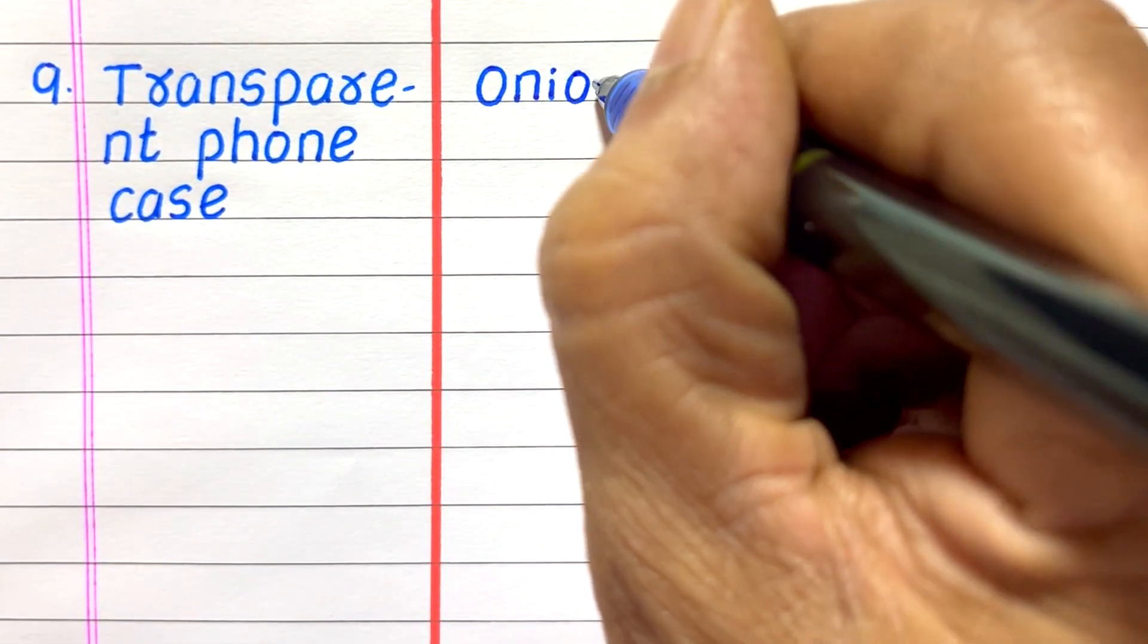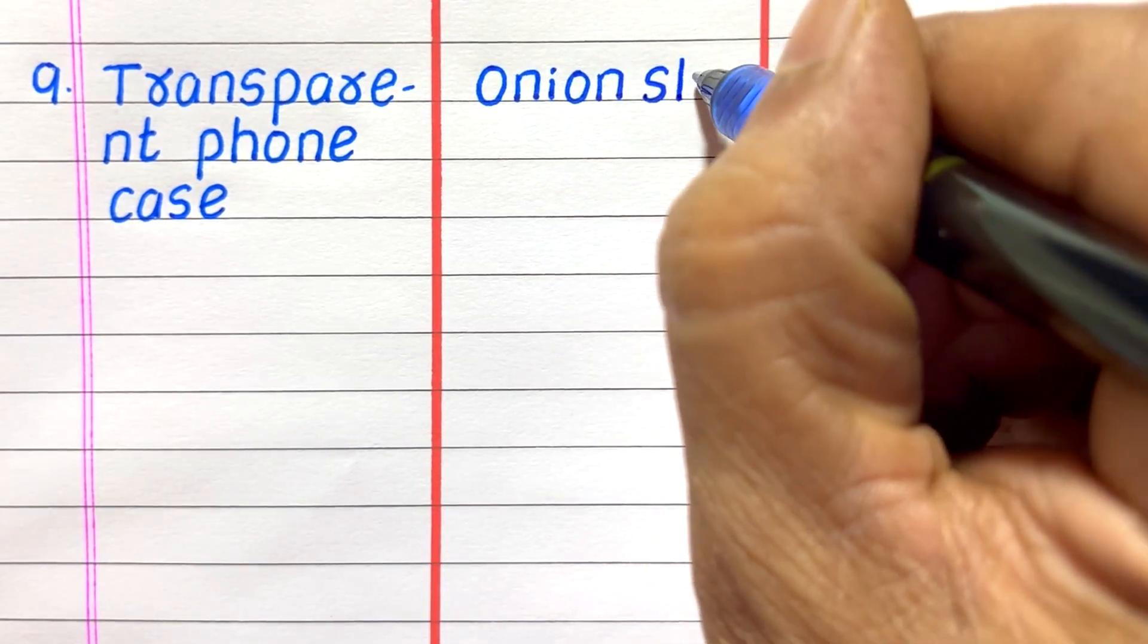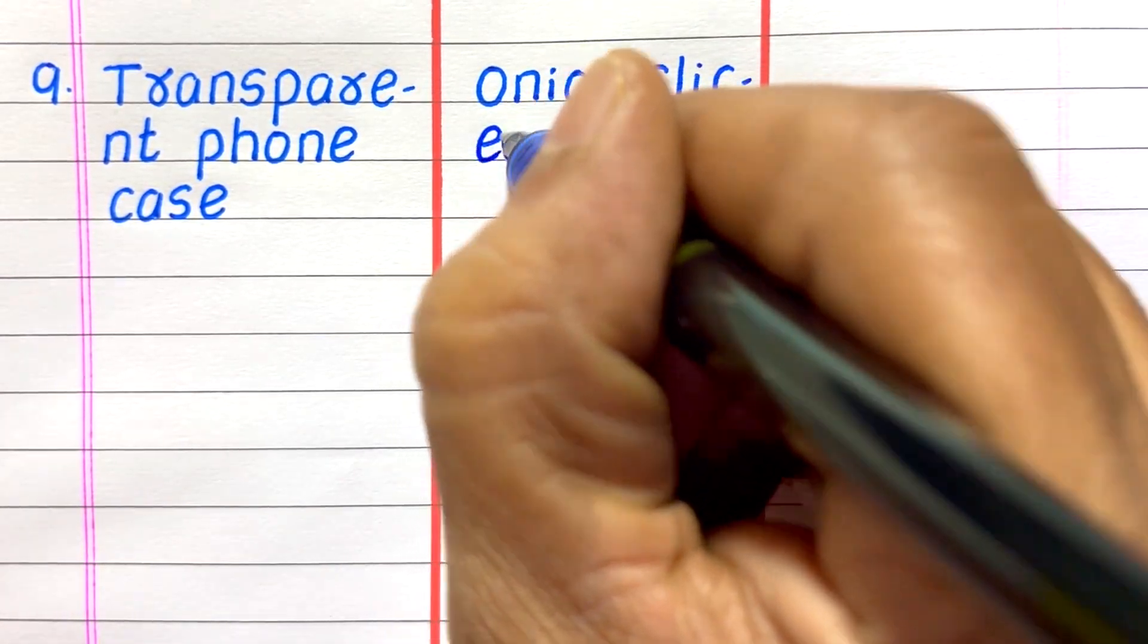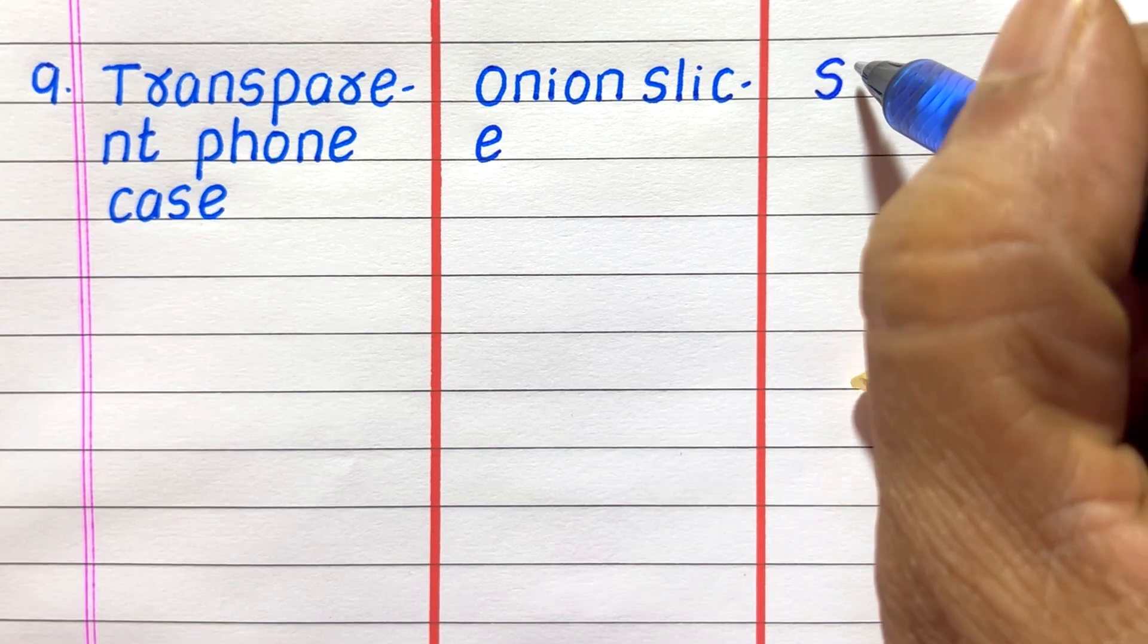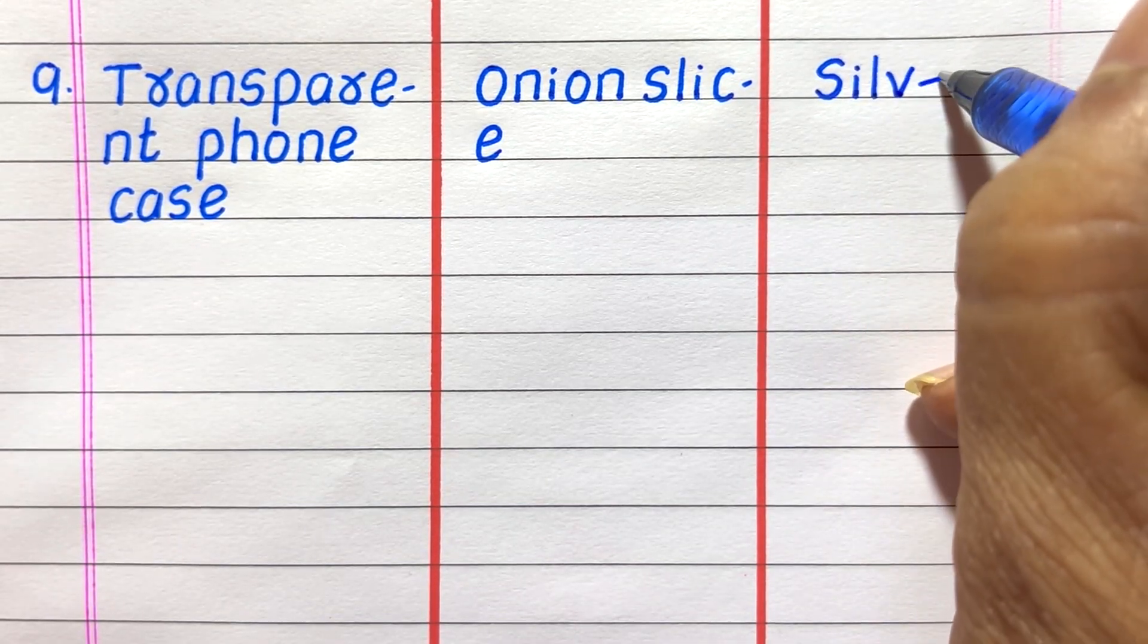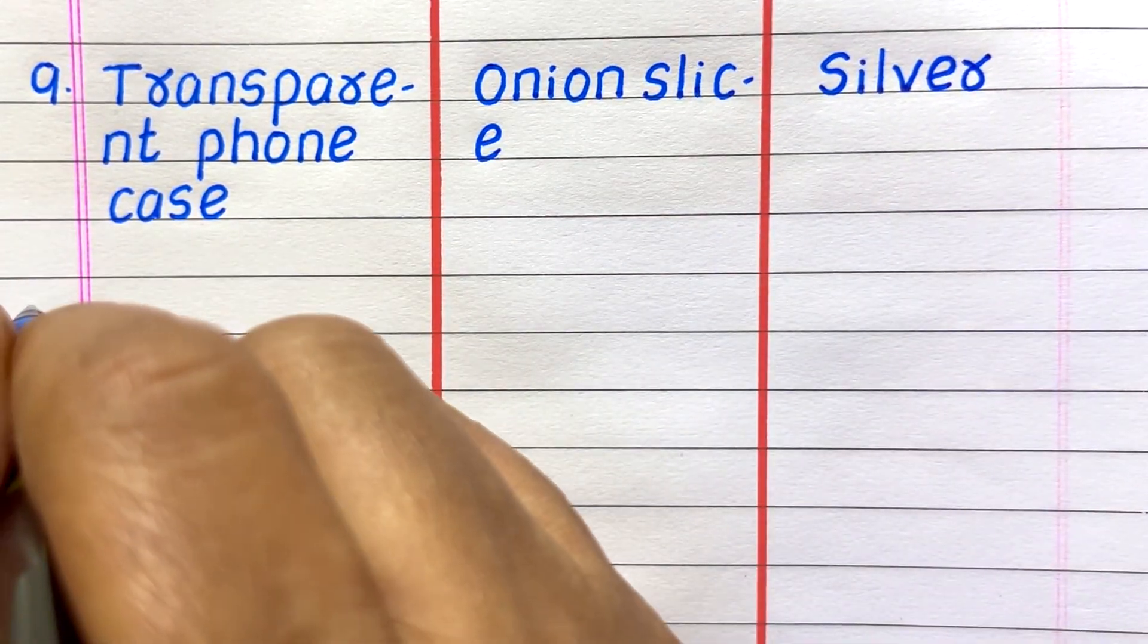Ninth example of a transparent object is transparent phone case, translucent onion slice, opaque silver.